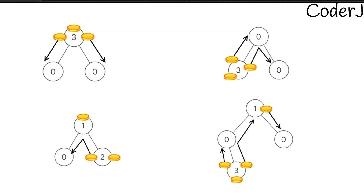For better understanding, let's look at example one. For a leaf node, there are three possibilities: the number of coins equals one, is greater than one, or is less than one. If it already has exactly one coin, zero moves are required. If it has less than one, it can only have zero coins, and in that case it needs one coin from its parent, which counts as one move.